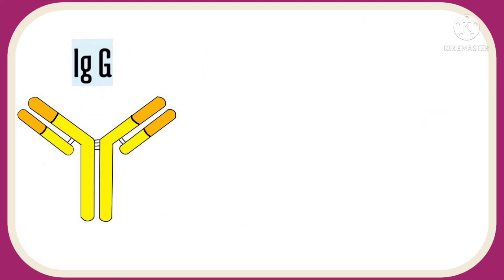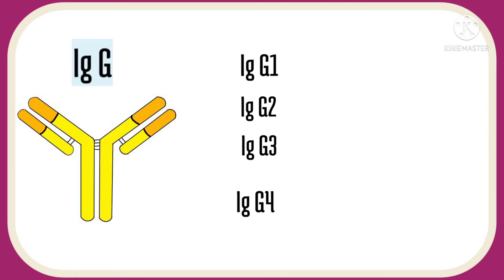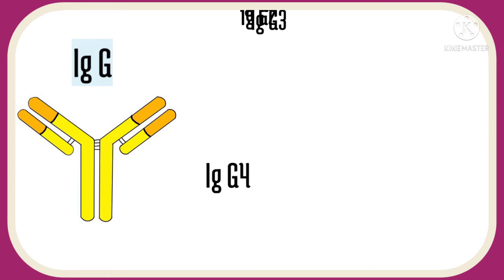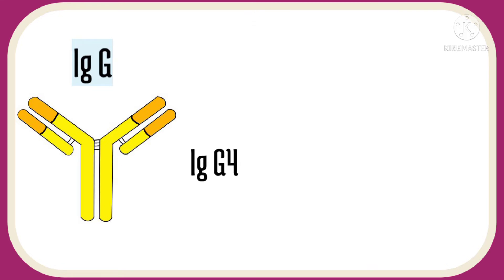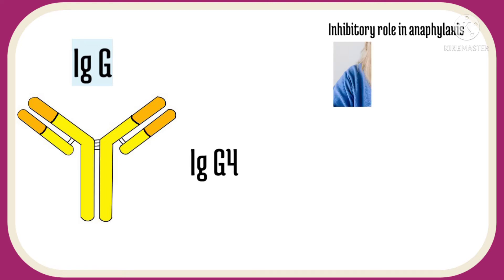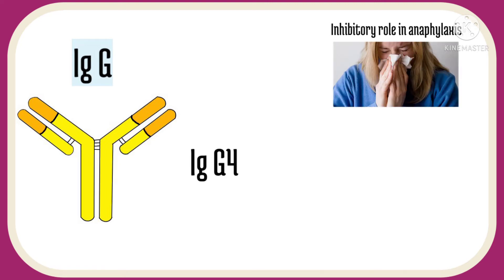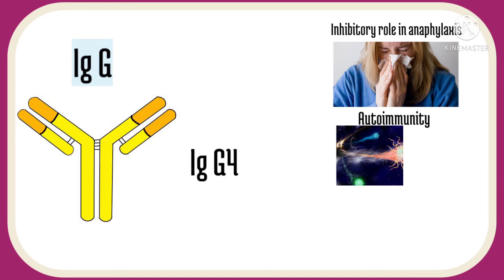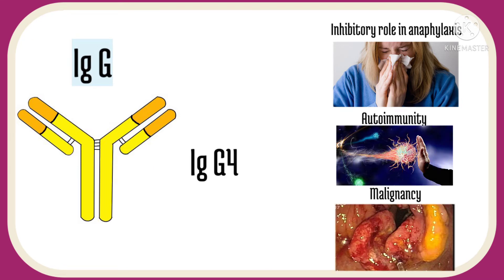There are four subclasses of IgG: IgG1, IgG2, IgG3, and IgG4. IgG4 is present in the least amount in the body and is commonly thought to have an inhibitory role in the process of anaphylaxis. It is also associated with autoimmunity and malignancy.